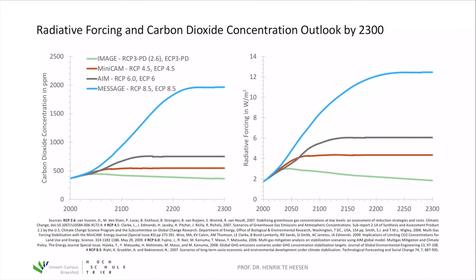Overall, climate simulation models help us understand what to do, which policies we need, and what commitments are required. The accuracy of these models is very high, and their complexity is increasing as more components — like the influence of clouds and aerosols — are better understood. These tools define our goals and commitments to reduce greenhouse gas emissions, and we need to act rapidly in order to limit global warming to 1.5 or even 2 degrees Celsius.